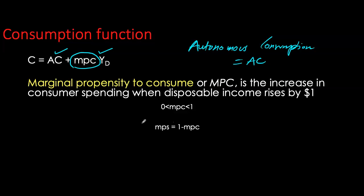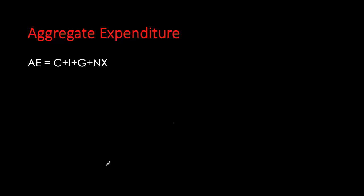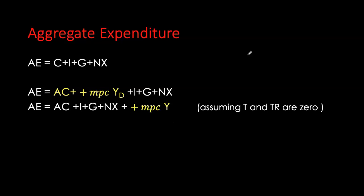MPC is typically between zero and one. The marginal propensity to save (MPS) is the proportion of additional income that you save, so MPS and MPC always sum to one. For example, if income rises by a dollar and MPC is 0.8, consumption increases by 80 cents; for a ten dollar income increase, consumption spending rises by eight dollars. Now let's put this consumption function into our aggregate expenditure equation: AE = C + I + G + NX. Substituting the consumption function, we have autonomous consumption plus MPC times disposable income, plus the remaining components. To keep things simple, we assume no taxes or transfers.